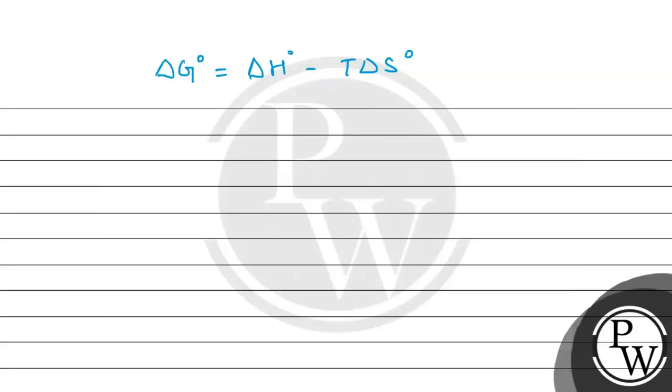Here H and S represent the enthalpy and entropy. Delta sign represents change and the degree symbol represents standard. Basically, we have standard conditions: room temperature reaction at 25°C, and the pressure is also fixed.